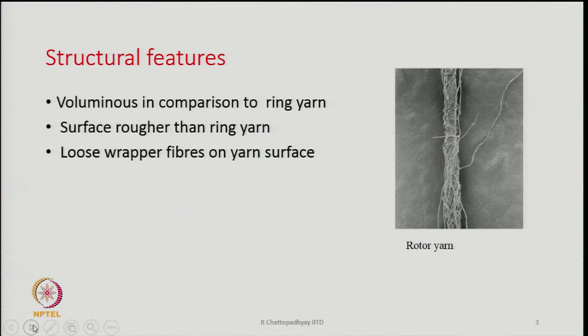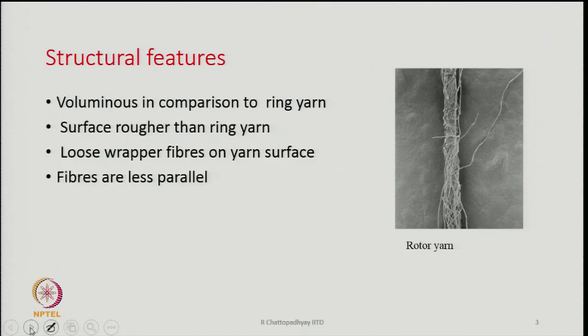Loose wrapper fibers can be seen on the yarn surface — many fibers are loosely wrapped and are not truly twisted; they are simply wrapping around the main body of the yarn. We call them wrapper fibers. In general, fibers are less parallel — both on the surface and within the yarn, the fibers are not very parallel with respect to the yarn axis, nor with respect to each other.